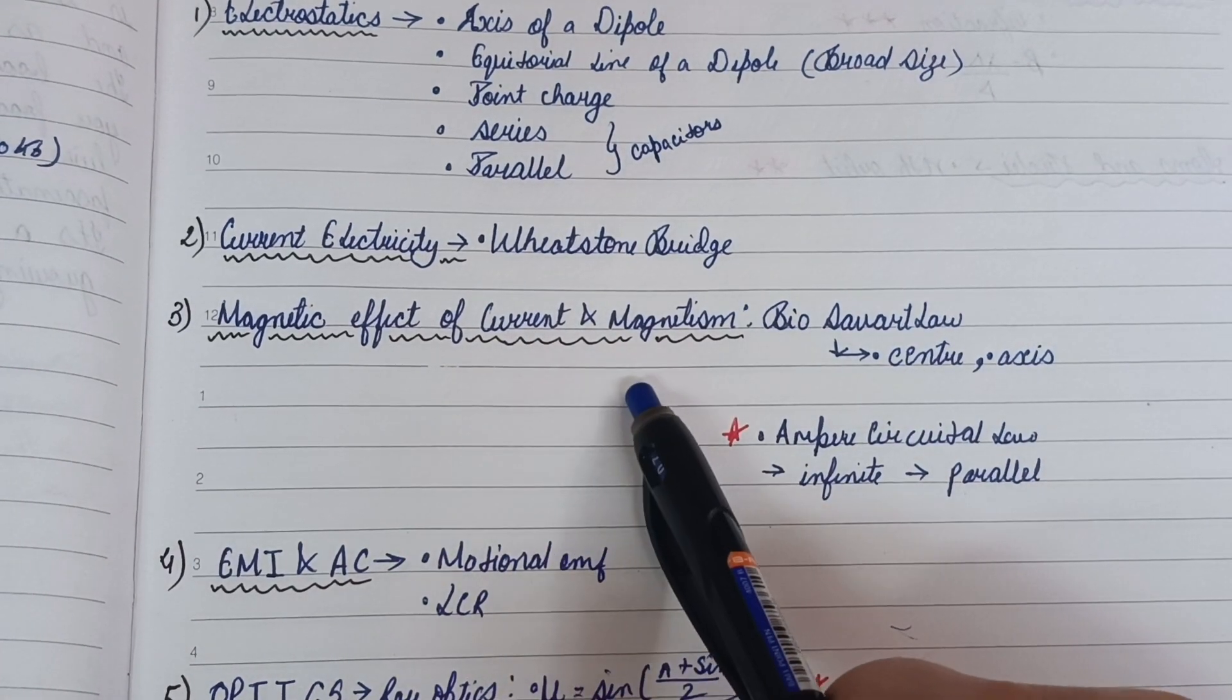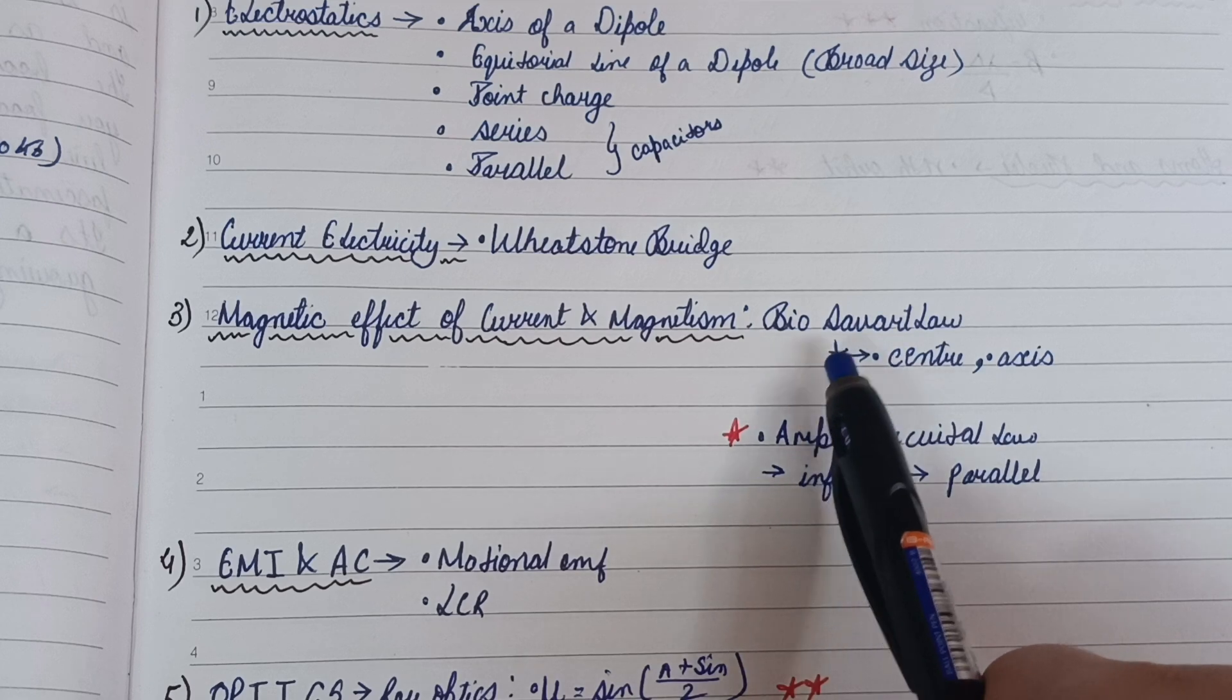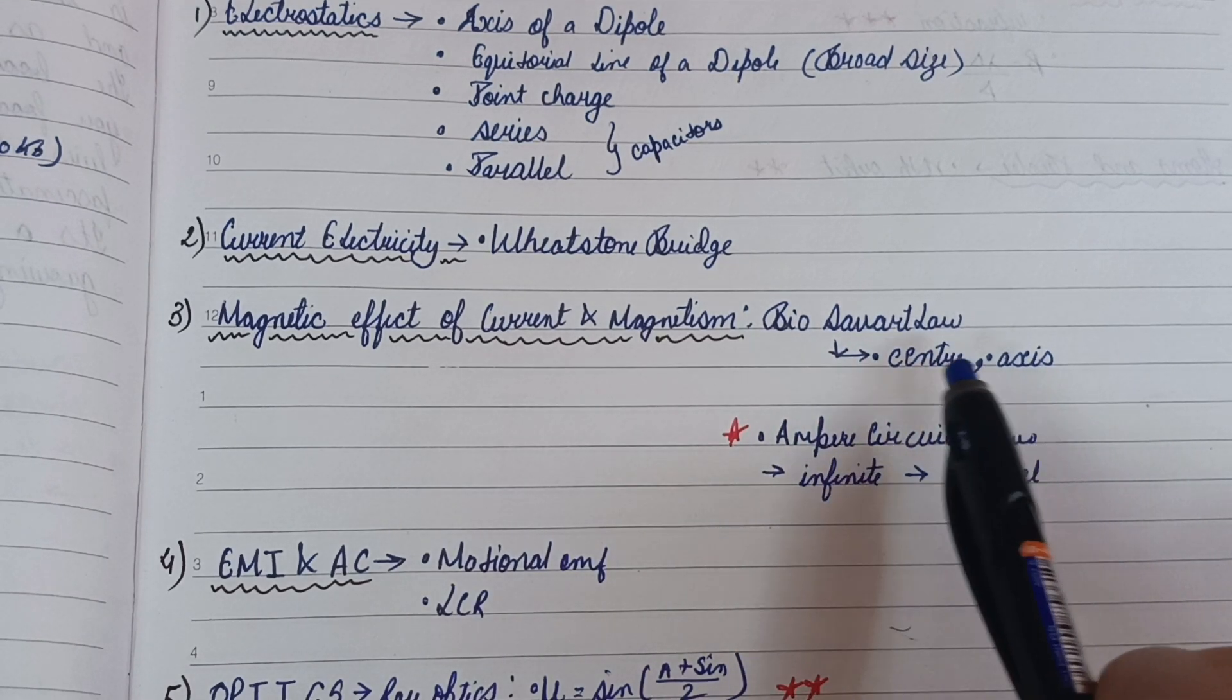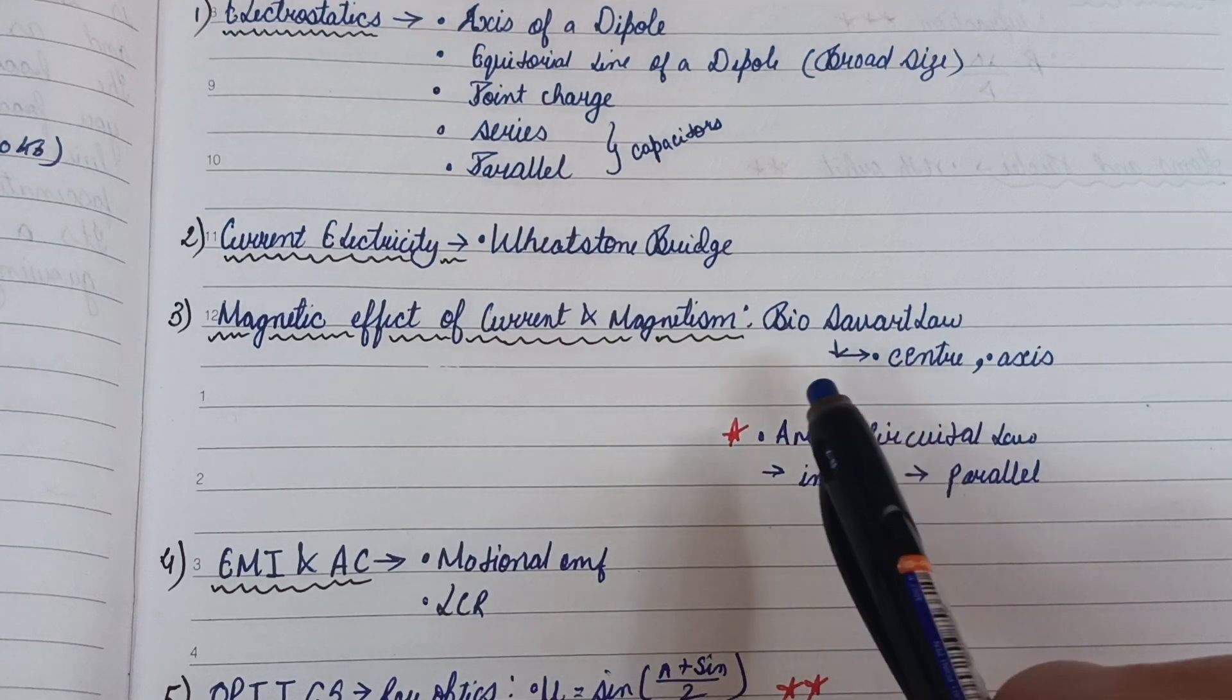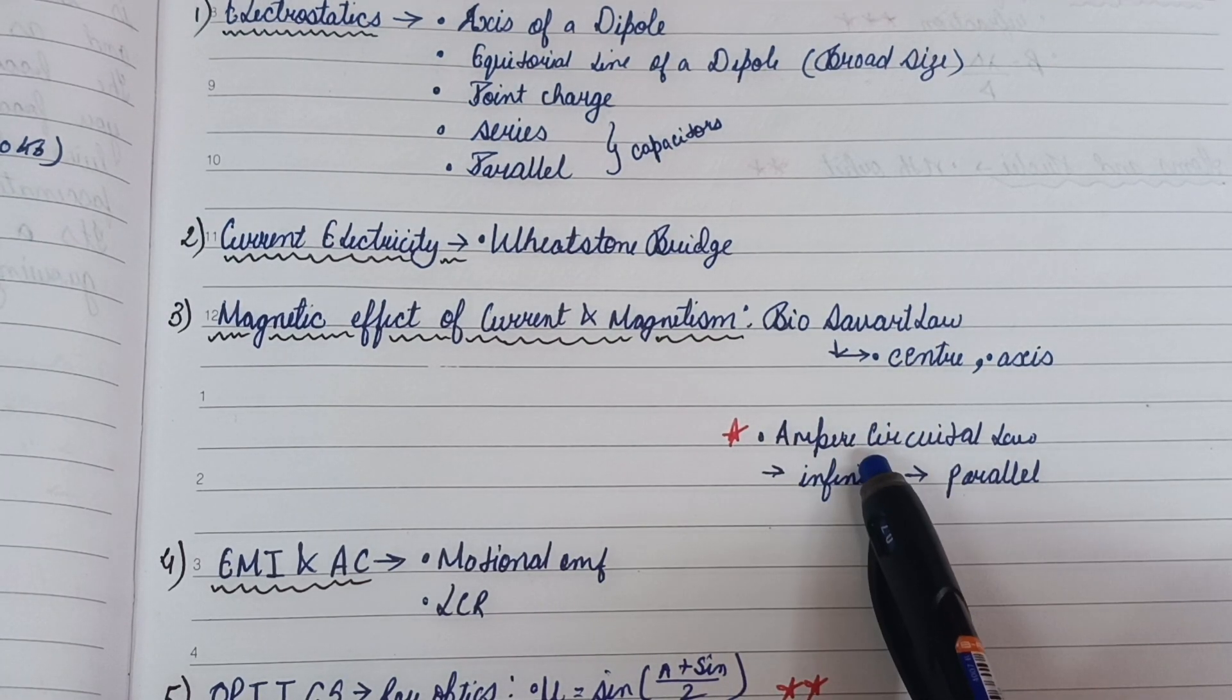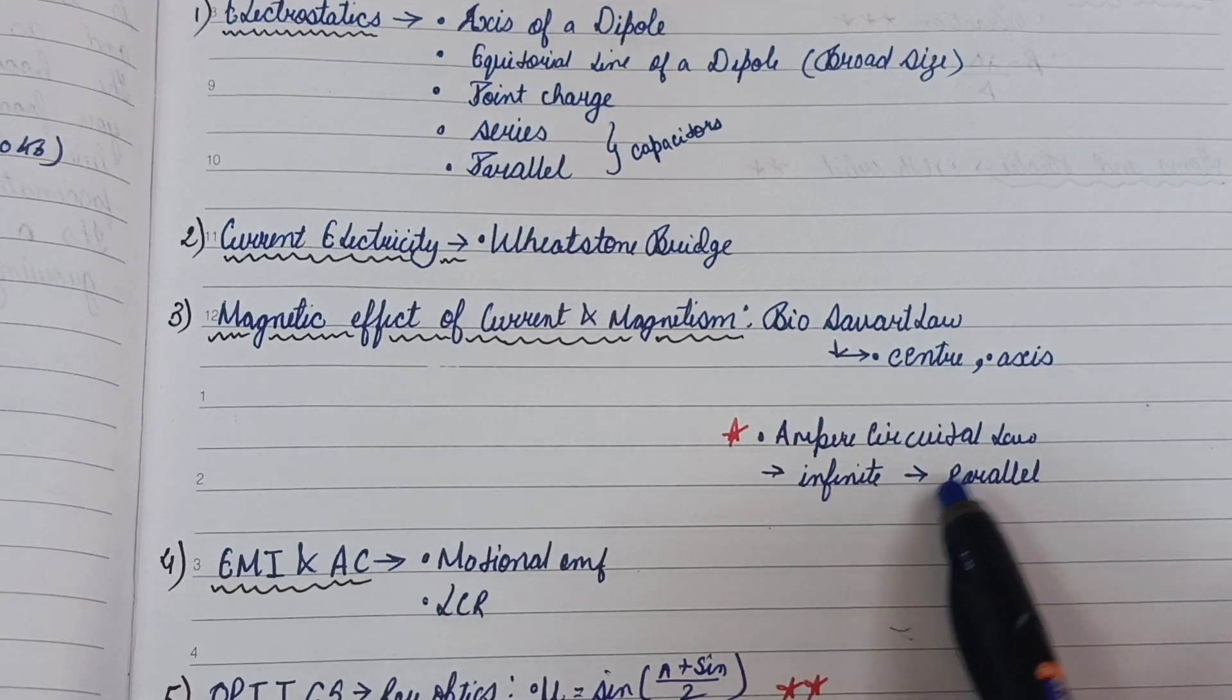From Magnetic Effect of Current and Magnetism, first is the Biot-Savart law in which you have to do the center one and the axis one. Then Ampere's Circuital Law, with which you have to do infinite and parallel ones. Ampere's Circuital Law is the most important for 2025 because in 2024 board has given Biot-Savart's law, but you have to do both.